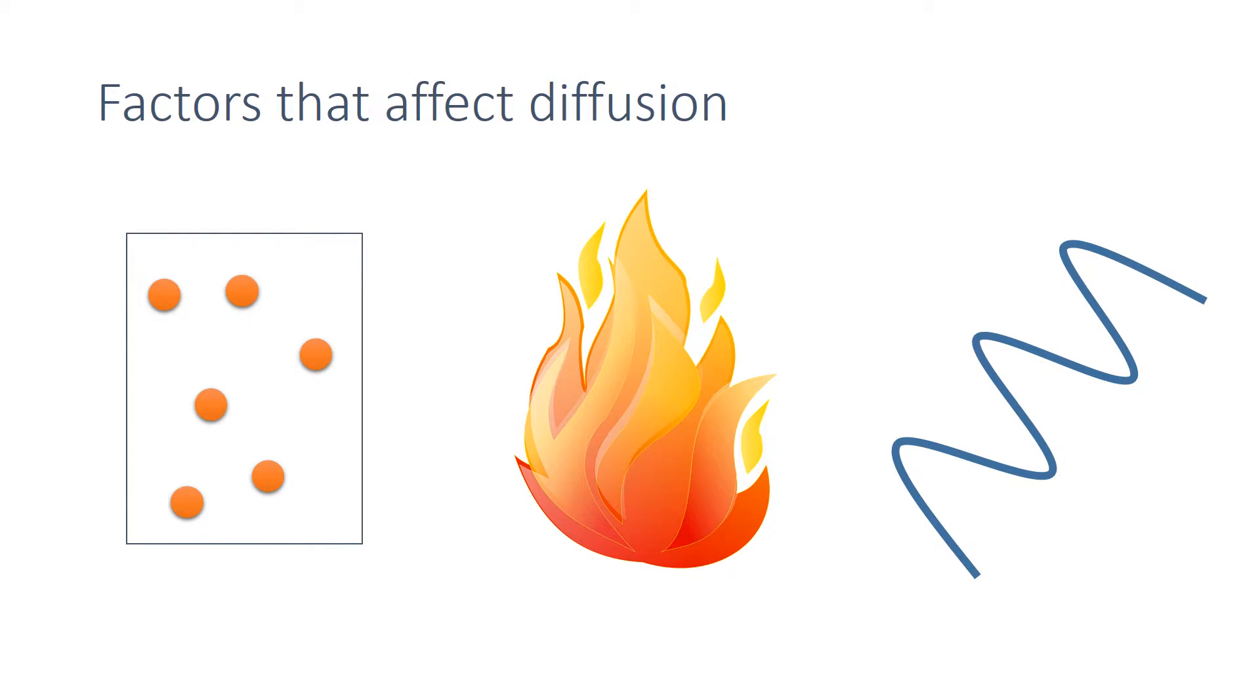You need to know the three factors that affect the rate of diffusion. They are the difference in concentration, the temperature, and the surface area of the membrane.